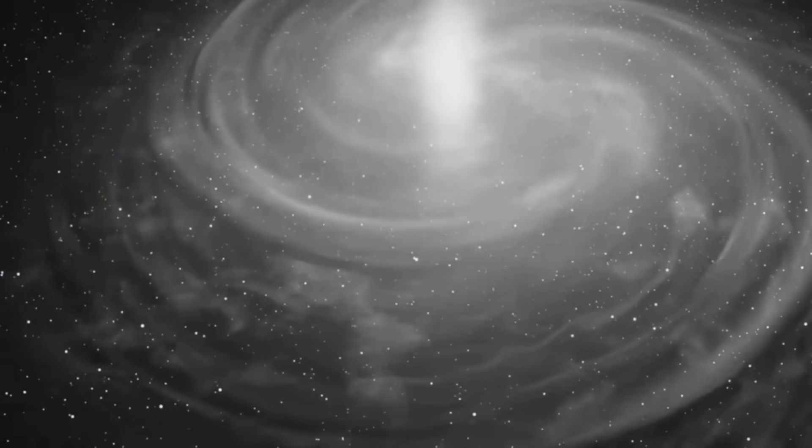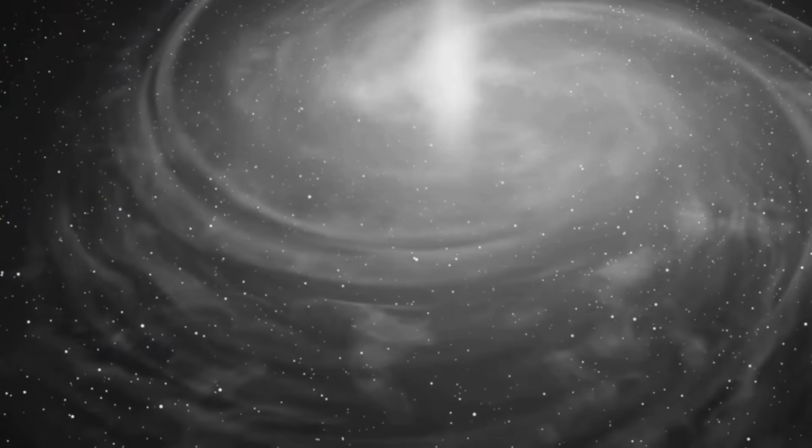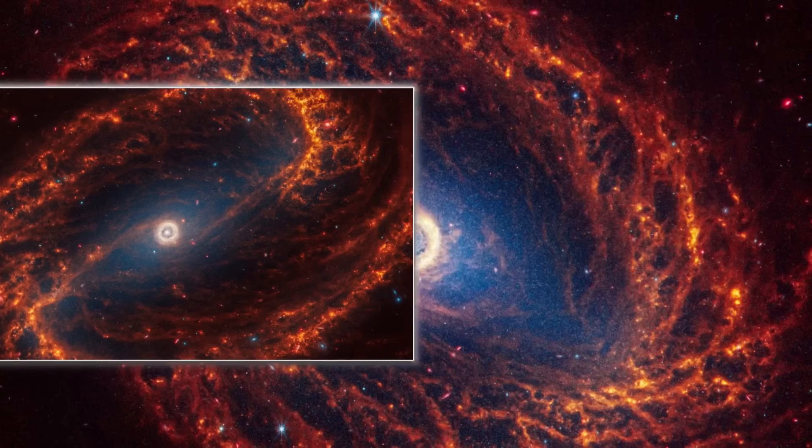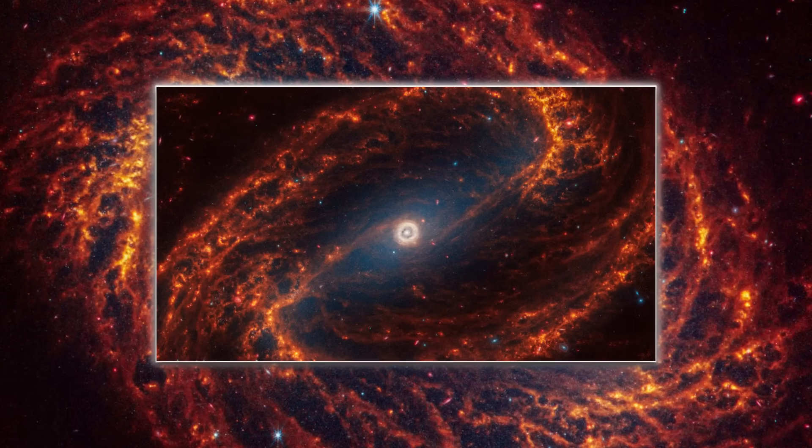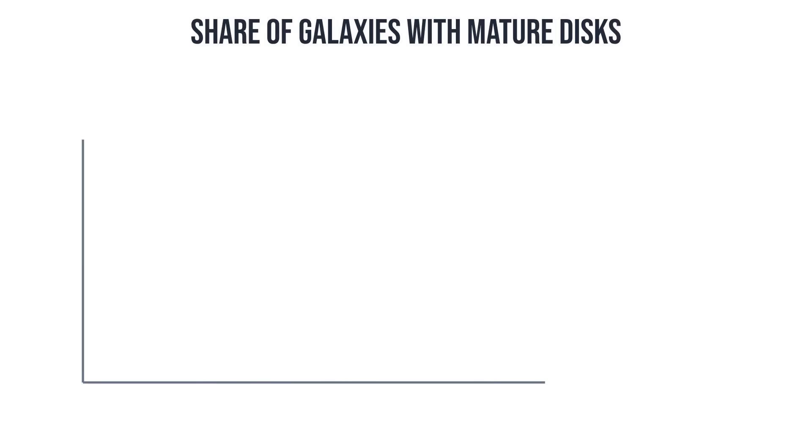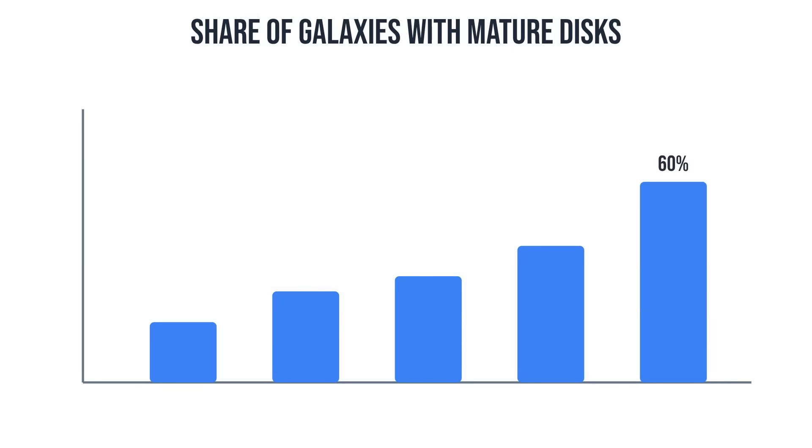Yet here, spiral arms wind gracefully around dense cores, and some galaxies already display central bars, signs of a settled, mature disk. The data show that disks capable of supporting these features were common much earlier than anyone anticipated.